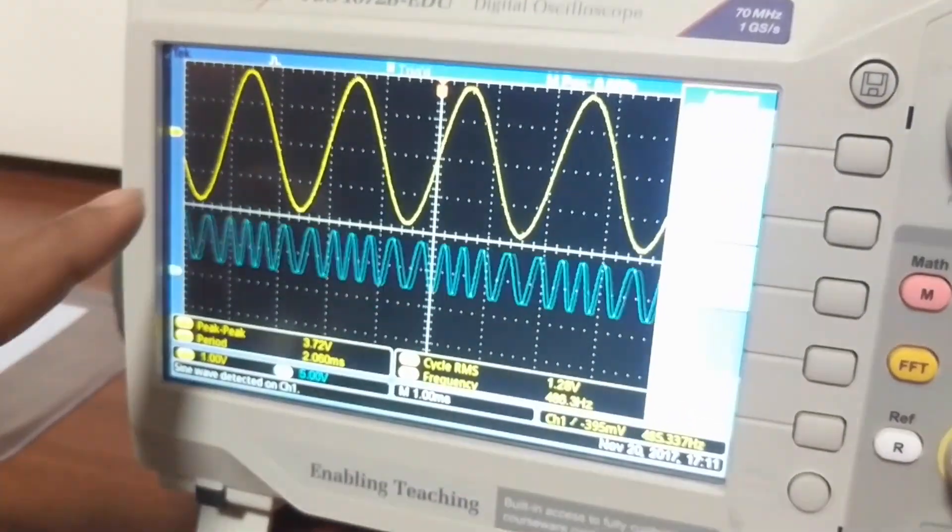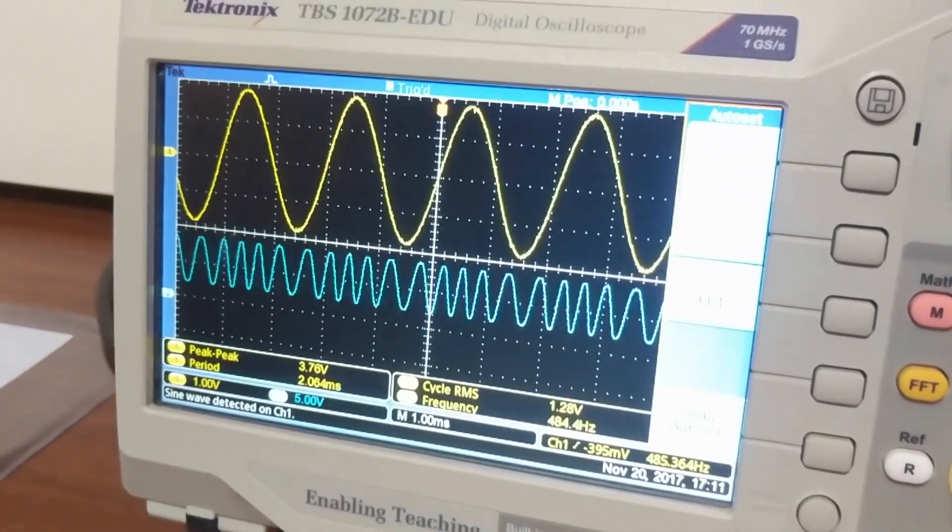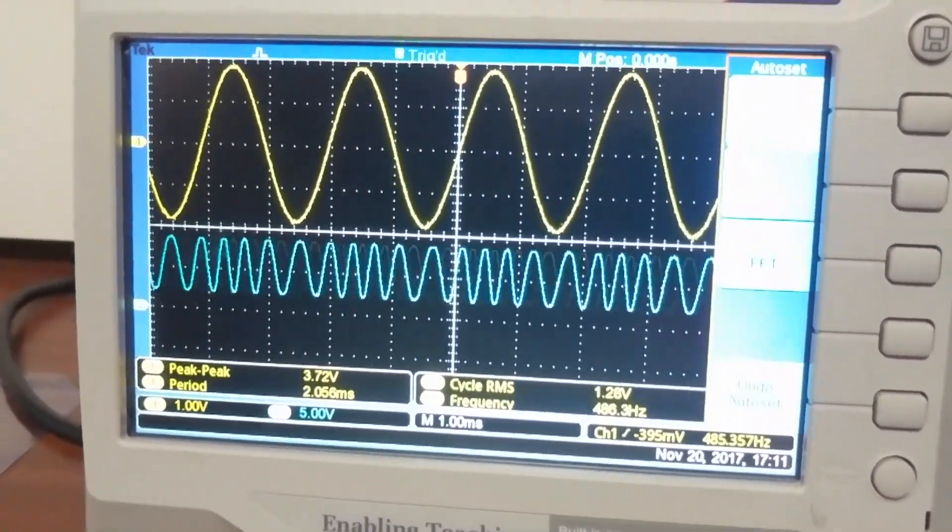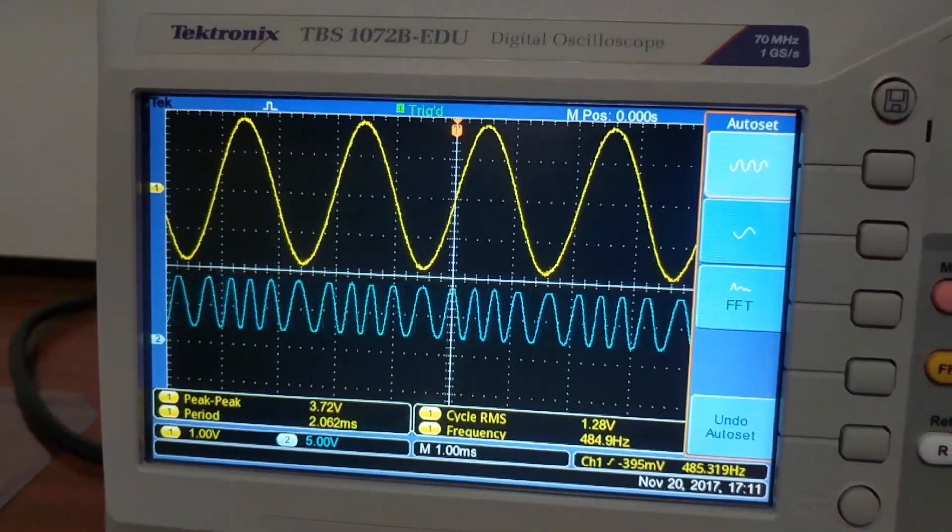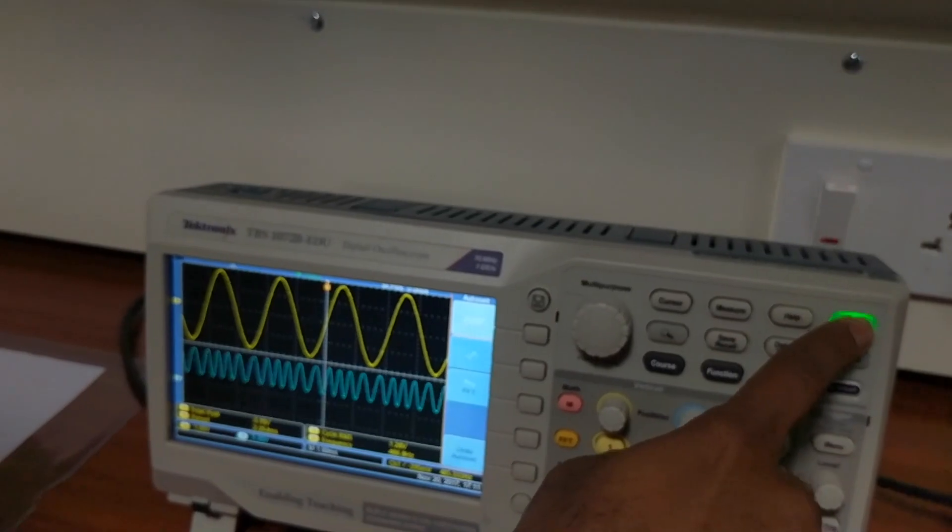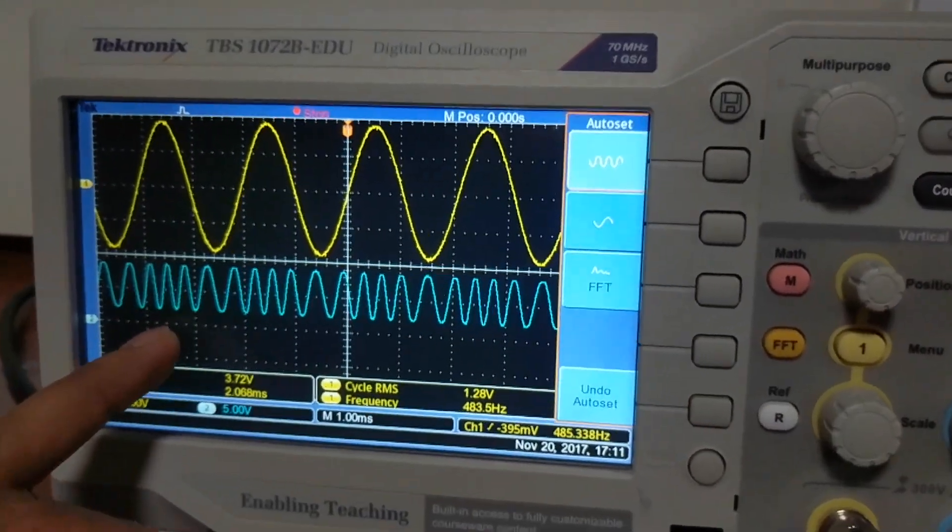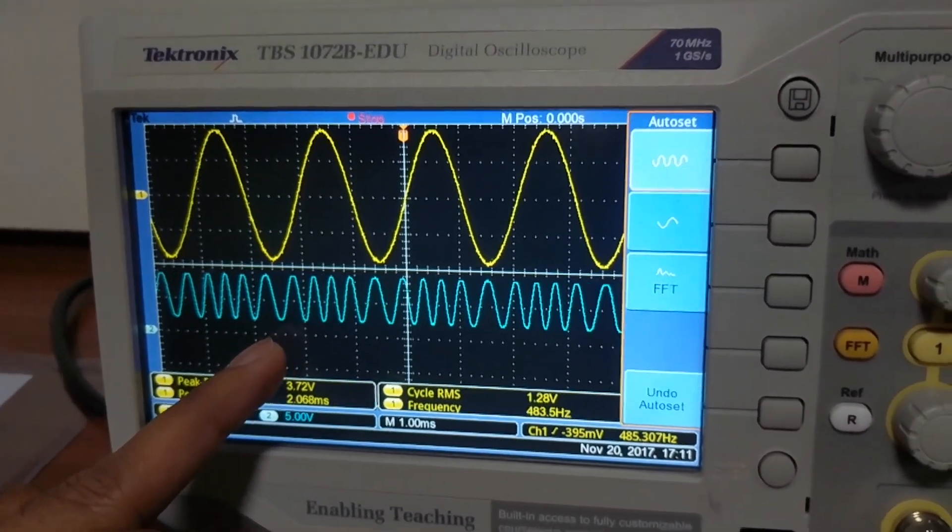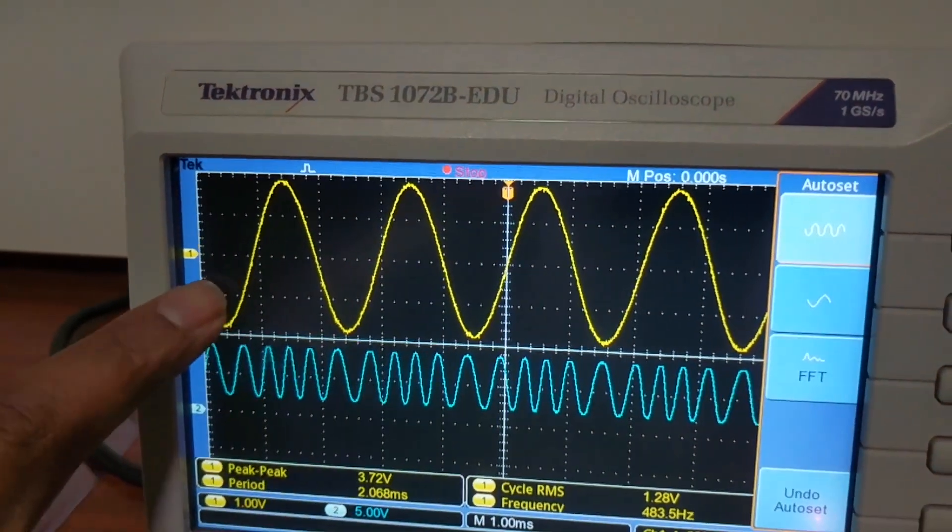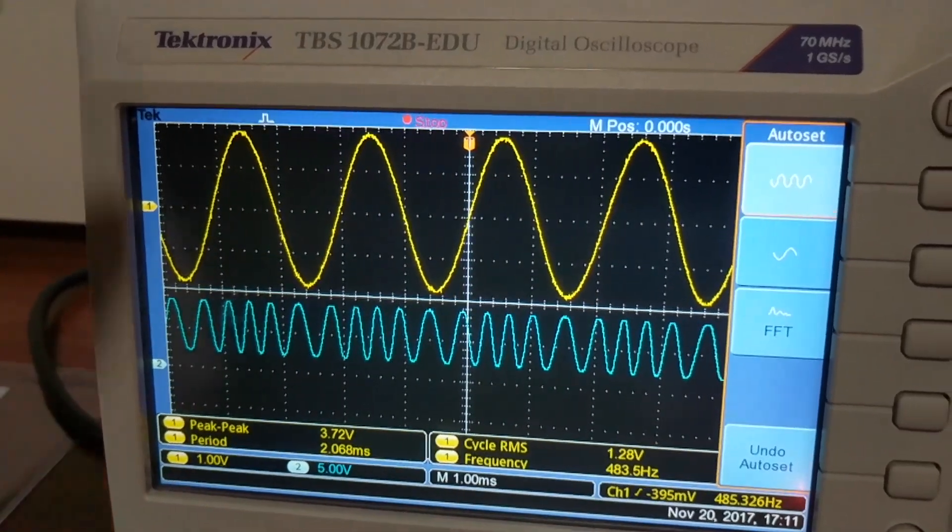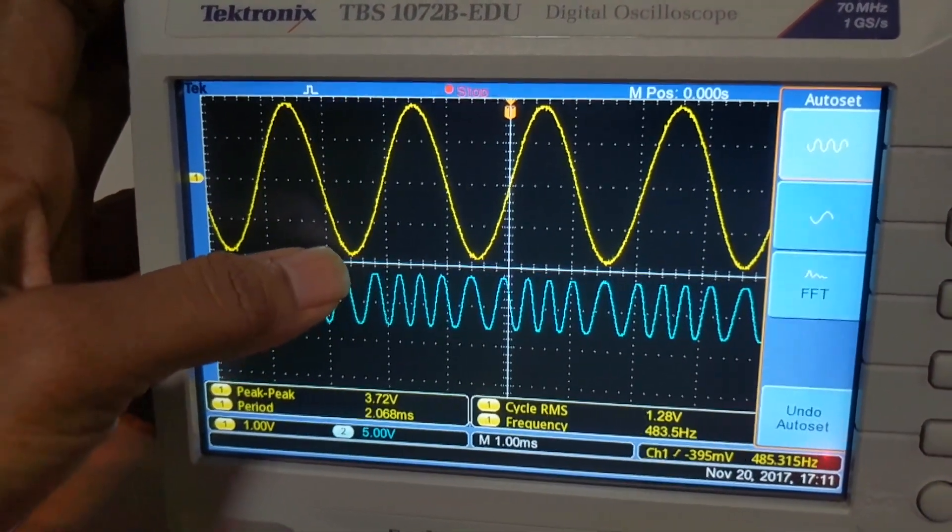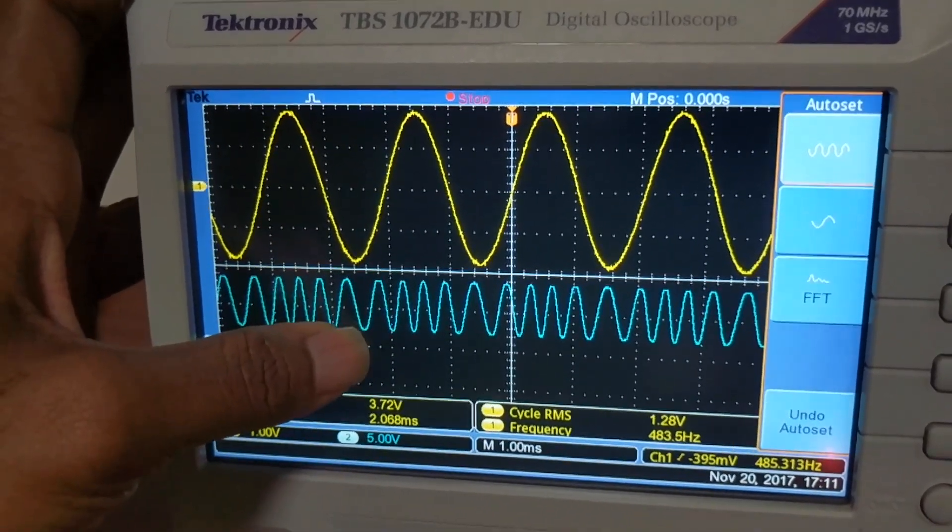Yellow is your input message signal and the blue color channel 2 is your FM frequency modulated output. As you see, you can observe here two frequency components, one is your higher frequency and one is your lower frequency. So what happens here, when the sine wave is at positive end, you will get a high frequency over here. When these are at the negative edge, you will get a low frequency.